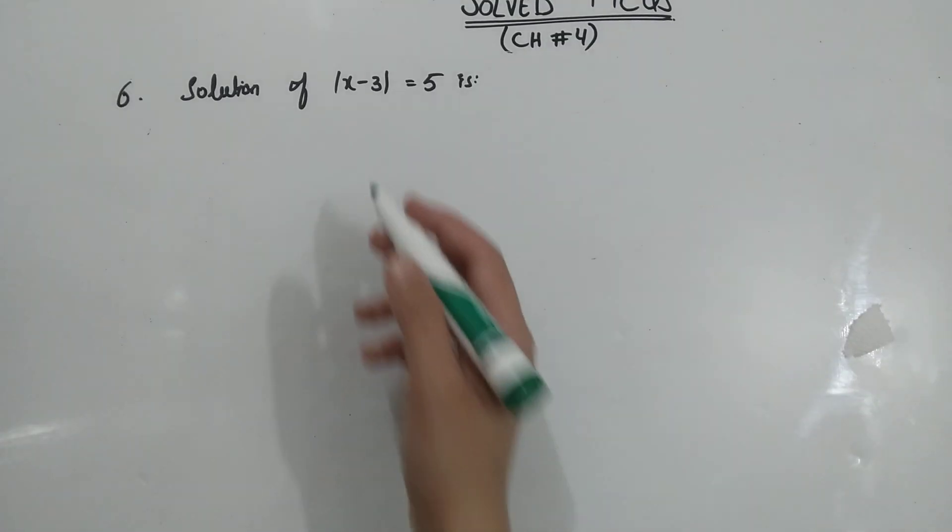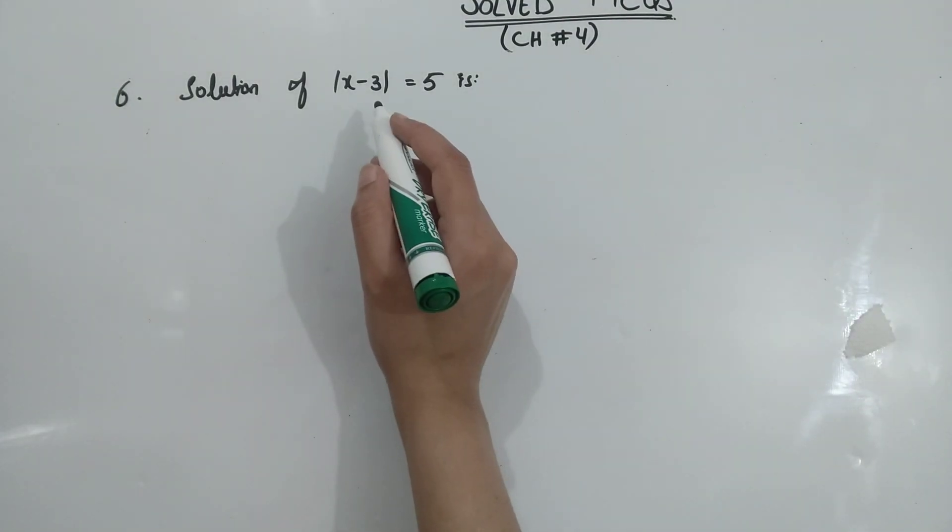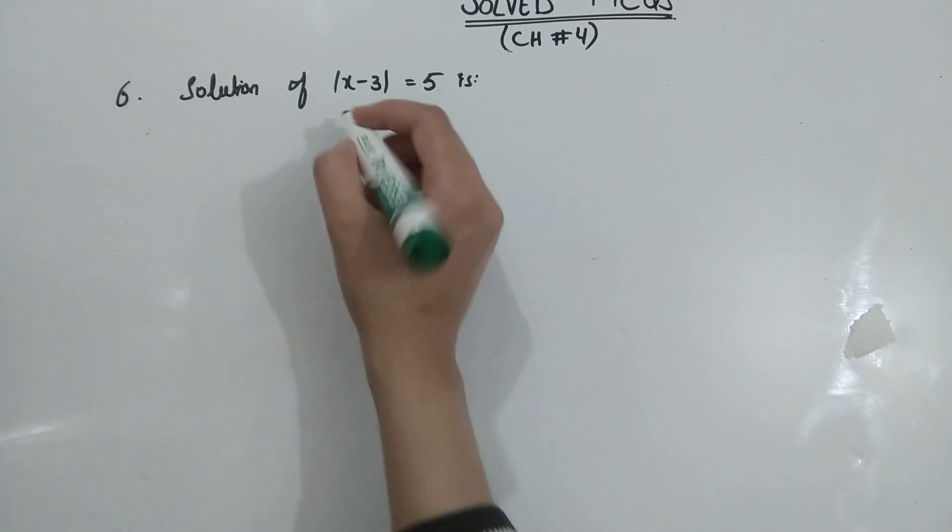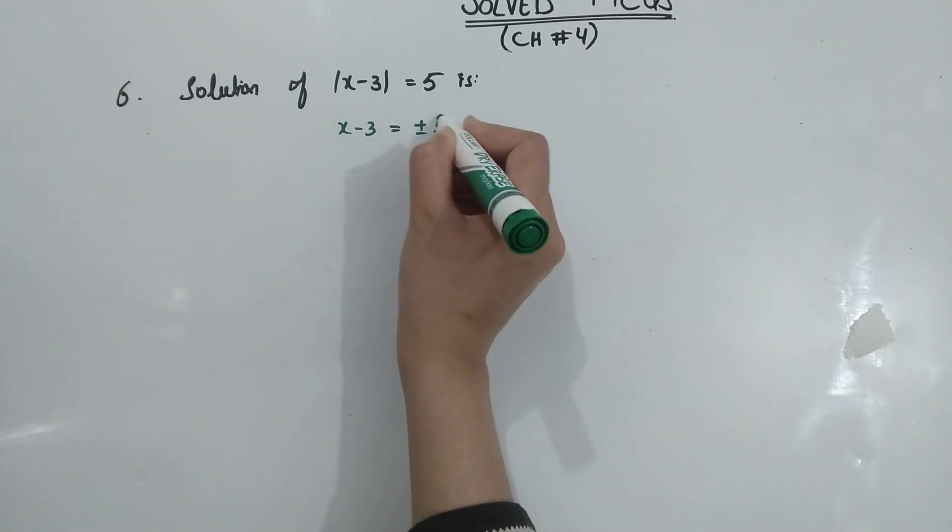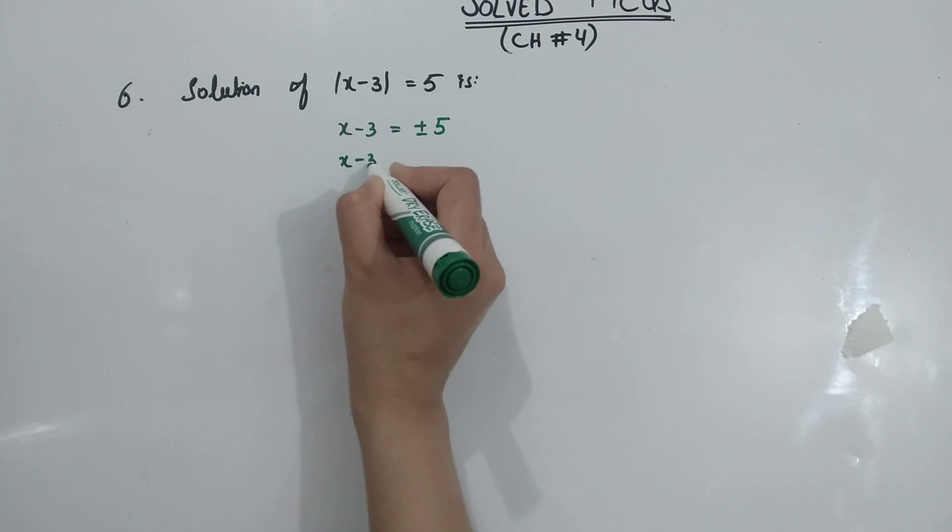Part number 6: You have to solve modulus value. This is MCQs and other short questions, so this is an important question. You can see that this is a modulus value. Remove this, it will be plus minus 5.